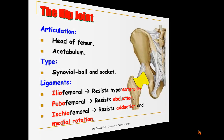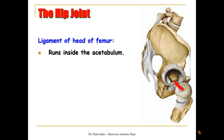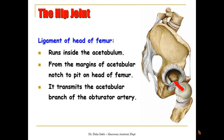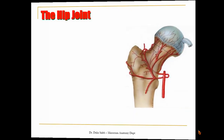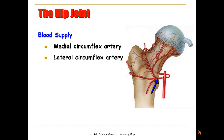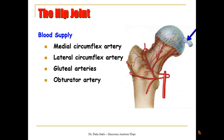Inside the acetabulum there is a ligament called the ligament of the head of the femur, or ligamentum teres. It runs from the margins of the acetabular notch to the pit at the head of the femur, and it transmits the acetabular branch of the obturator artery. The arterial supply of the hip joint is derived from the medial circumflex femoral artery, the lateral circumflex femoral artery — both branches of the profunda femoris artery — descending branches of the superior and inferior gluteal arteries, and the acetabular branch of the obturator artery. The main blood supply is from the medial circumflex femoral artery.